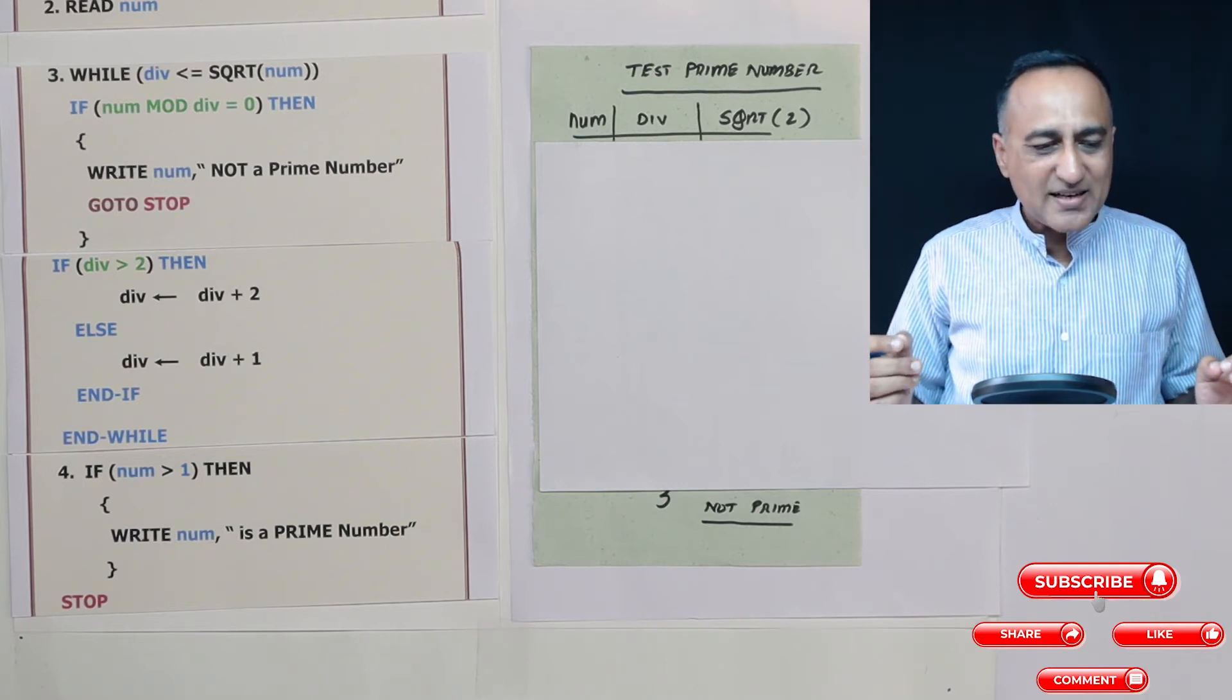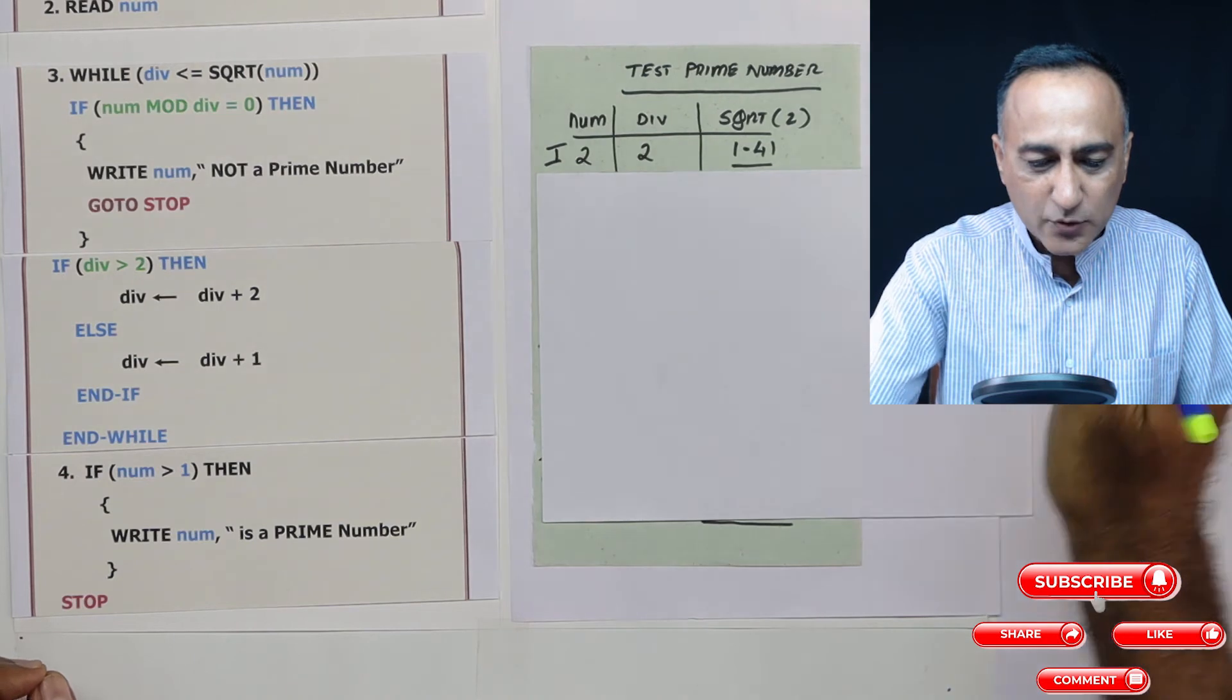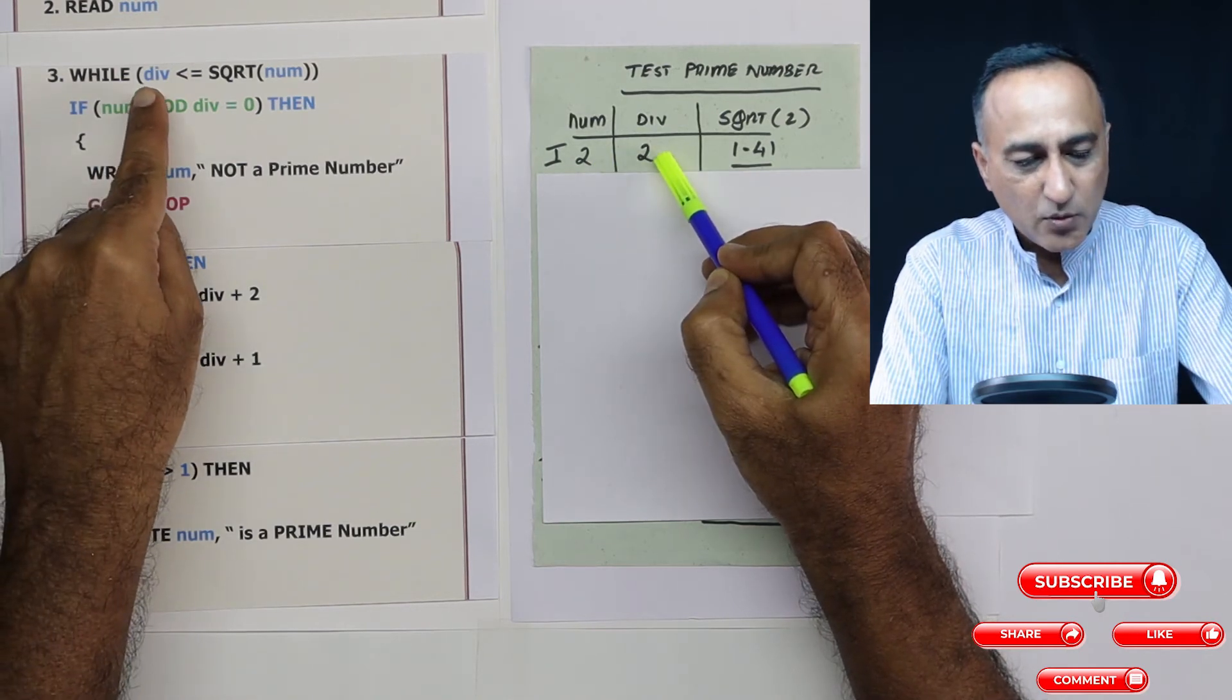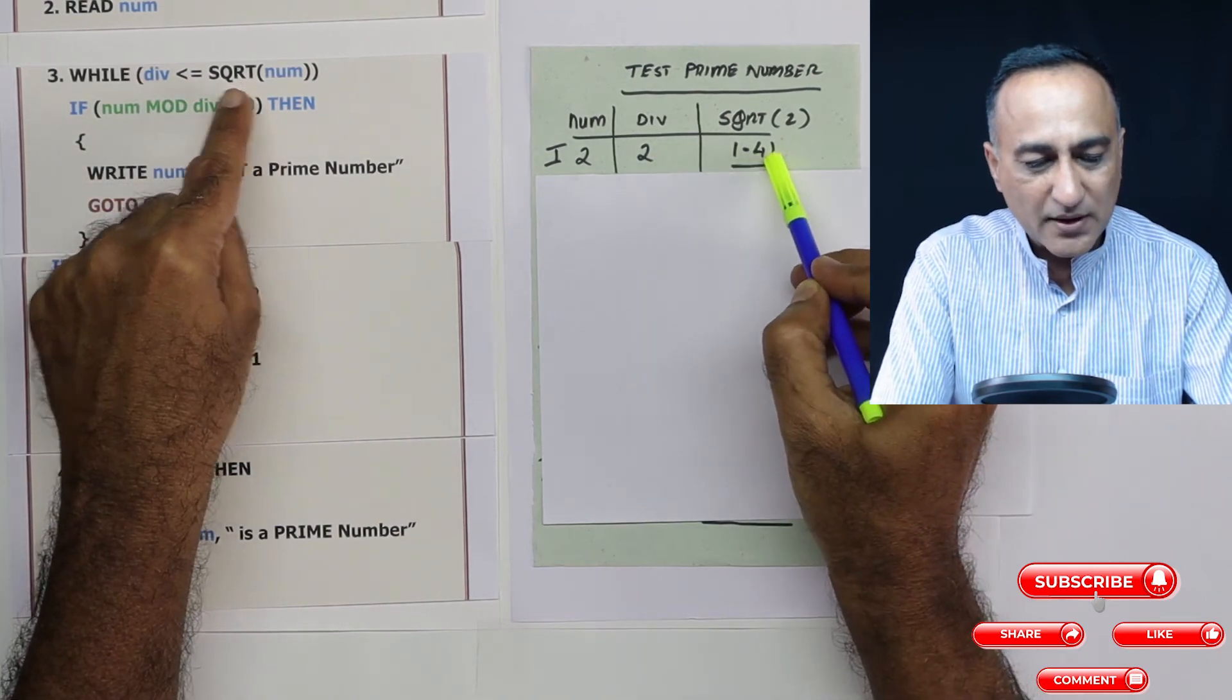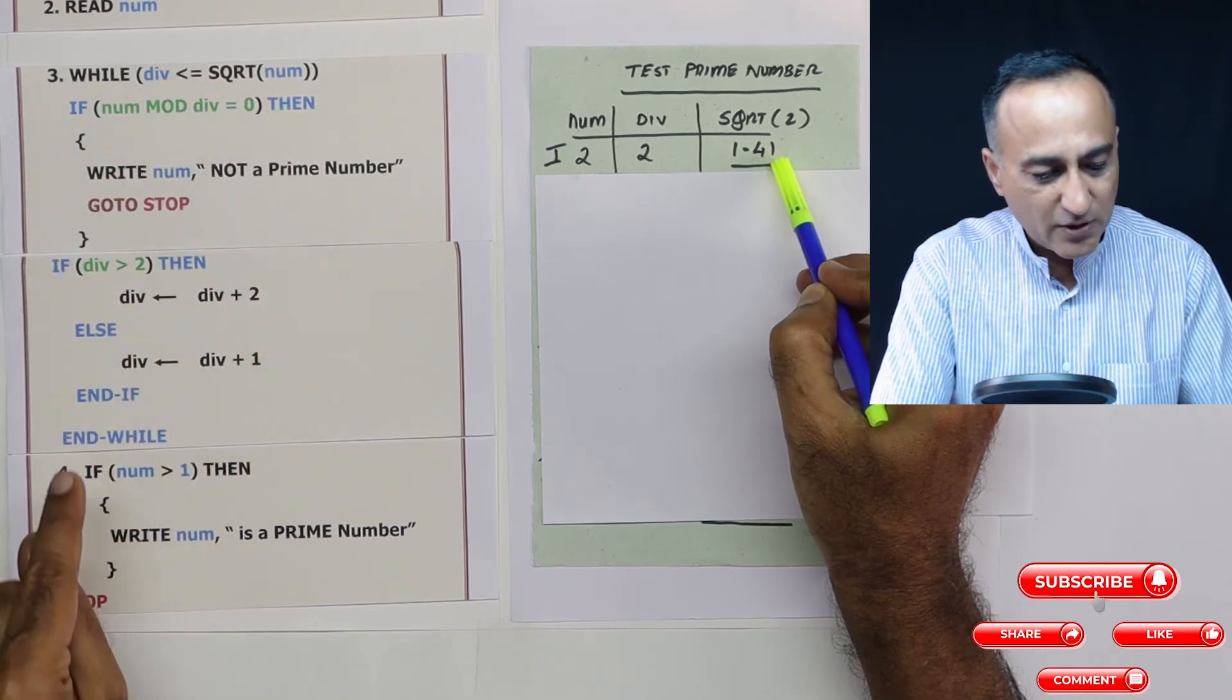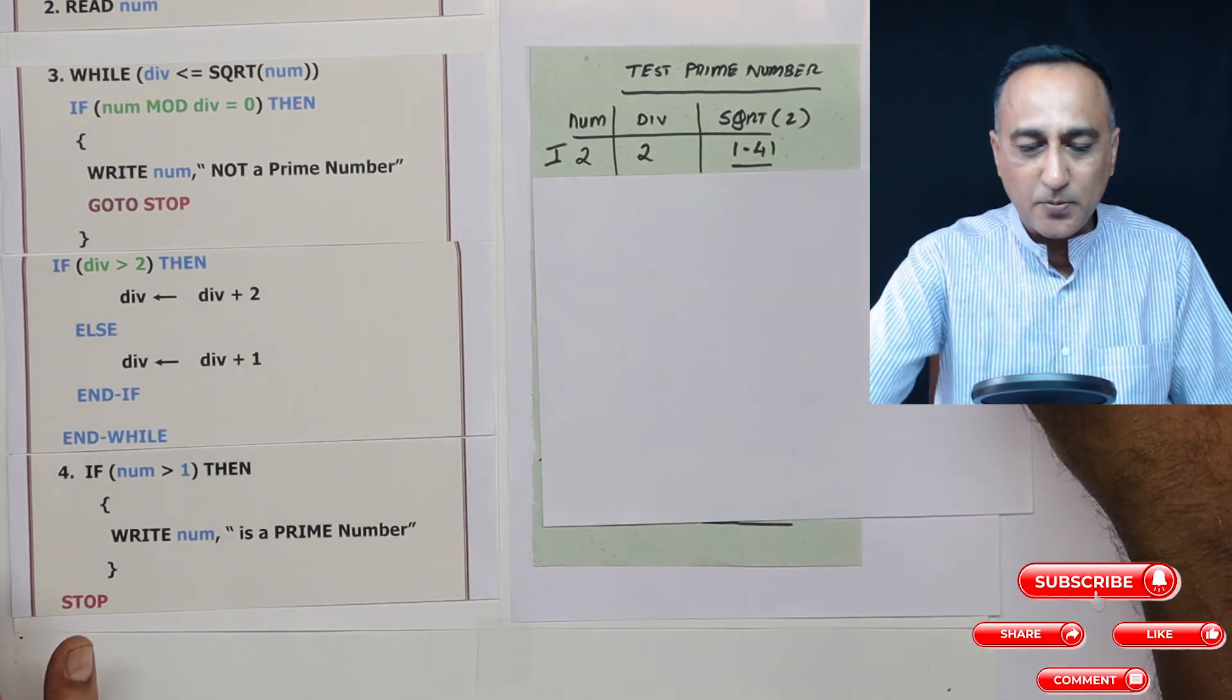In order to understand this logic, let's take a look at a run. I am going to take some data values. Let's say the input number, I am reading the number as 2. Number is 2, divisor is also 2. What about 2? 2 is the divisor, square root of 2 is 1.41. This condition initially only will fail because 2 is not less than or equal to 1.41. So I will directly come to step number 4. Number 2 is greater than 1, so I am going to say 2 is a prime number. It's dealt with 2 perfectly.